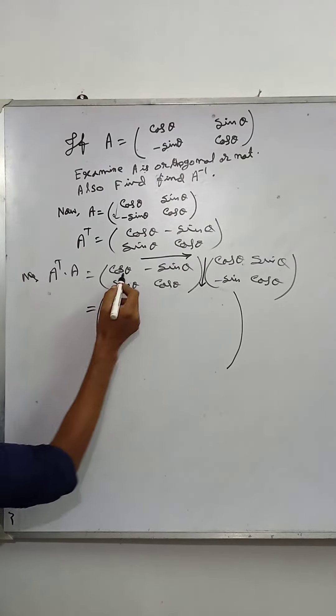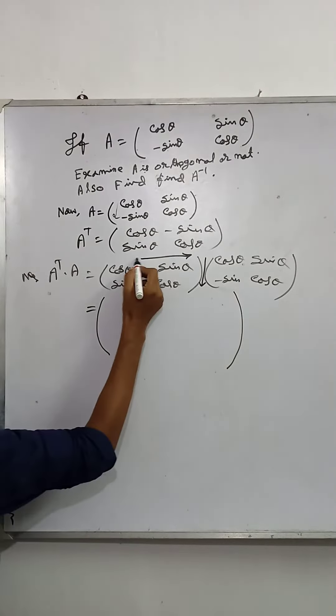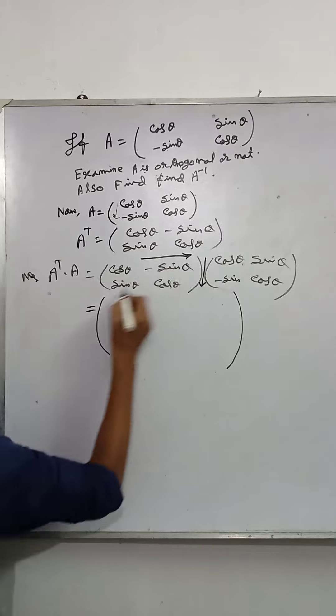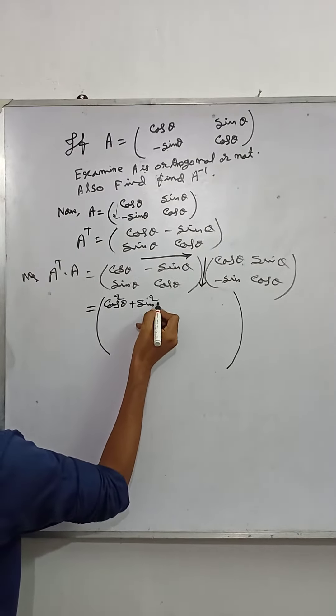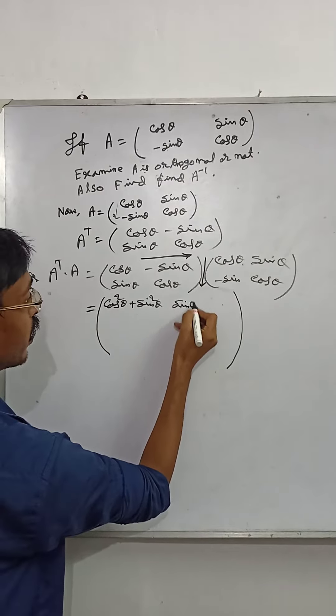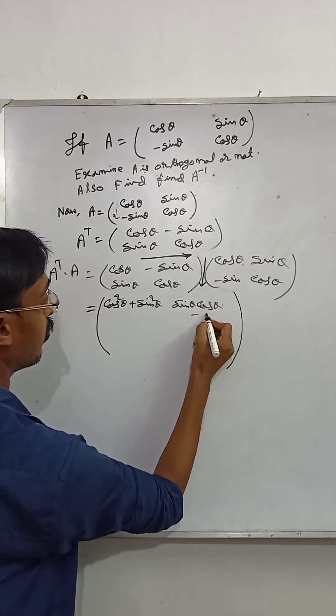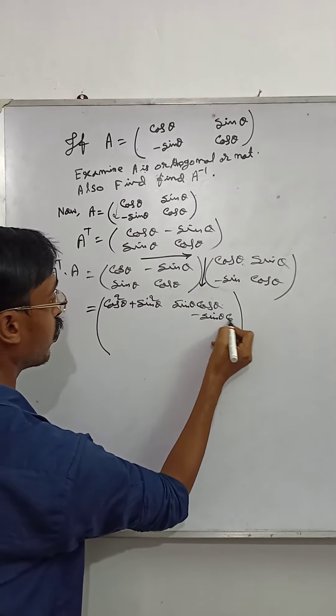Now, A transpose dot A: cos θ multiplied, this is the row, this is the column, that means cos²θ plus sin²θ. Then sin θ into cos θ minus sin θ into cos θ.